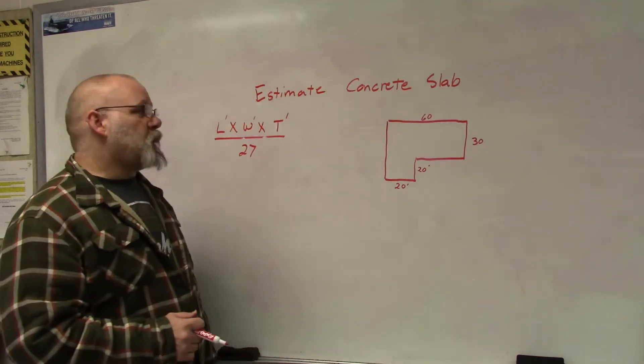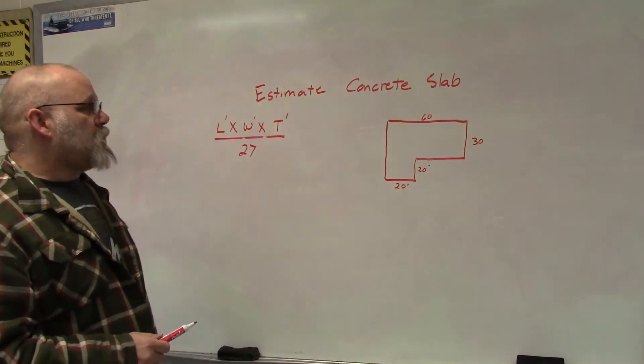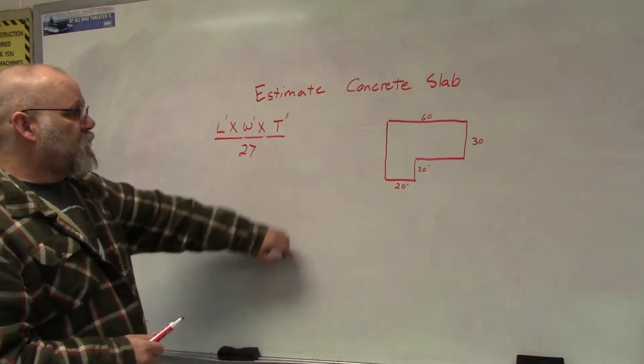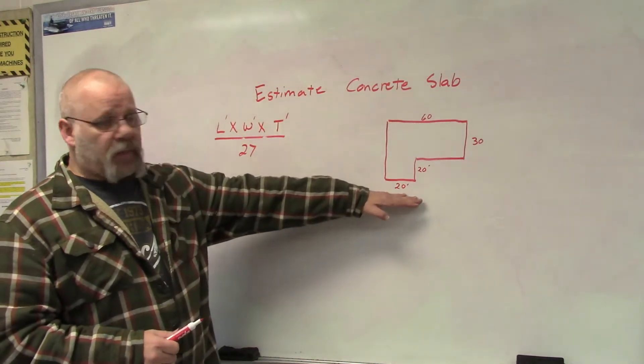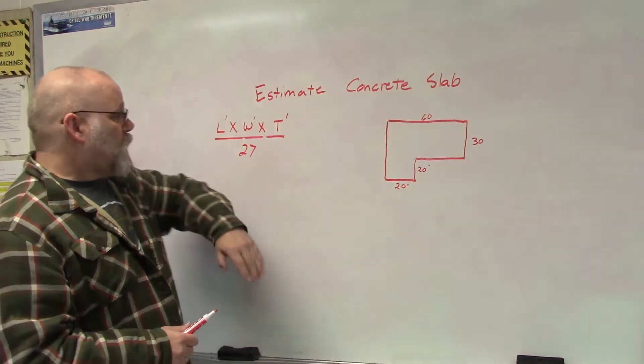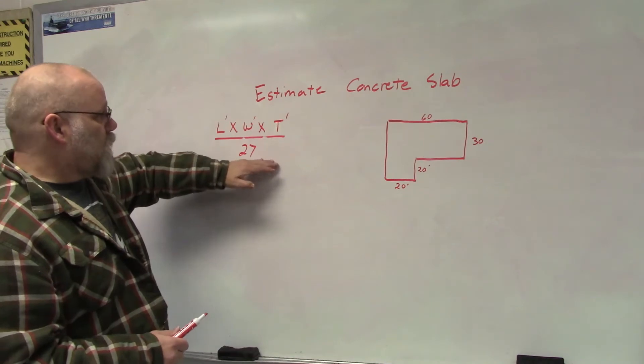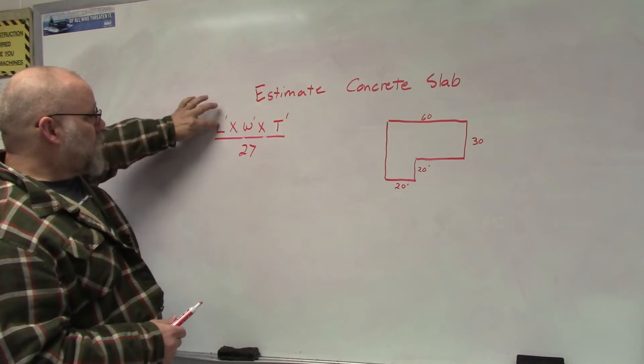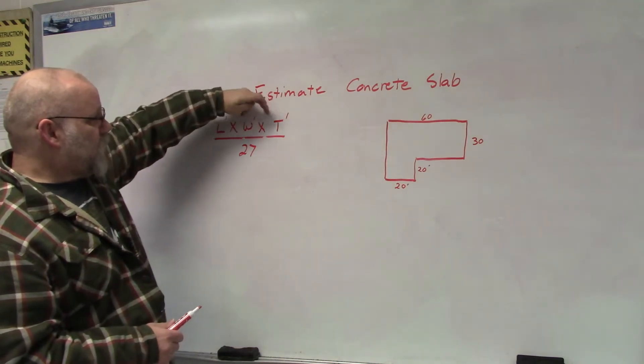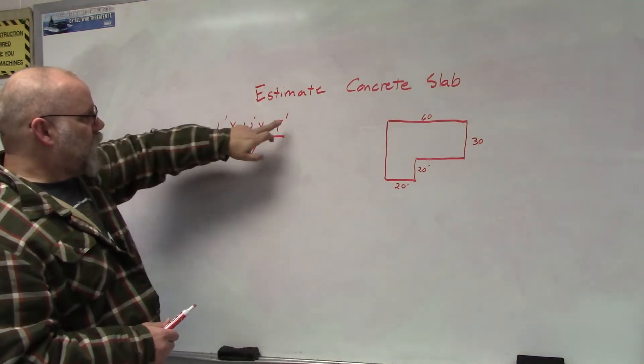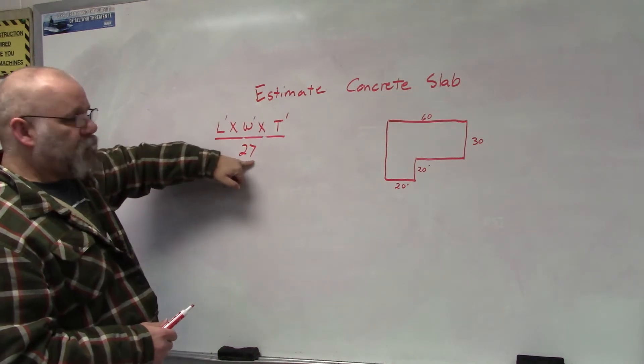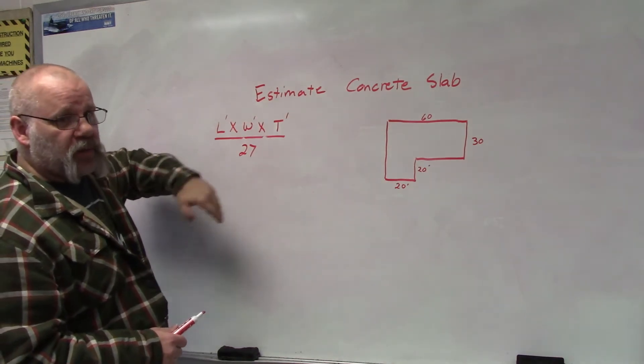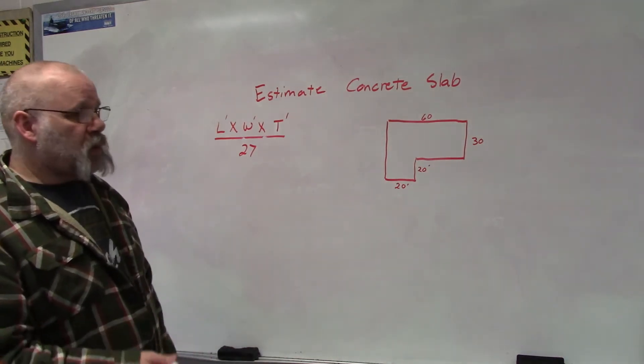Alright, how do we estimate a concrete slab? First, we have to have a drawing with some dimensions, and then you need to have your equation. Since I'm going to be working with rectangles, my equation would be length times width times thickness—those are in feet—and then I'm going to divide by 27 because there are 27 cubic feet in a cubic yard. That's my conversion into cubic yards.